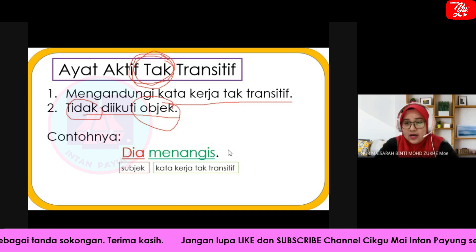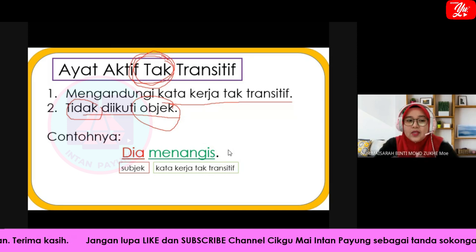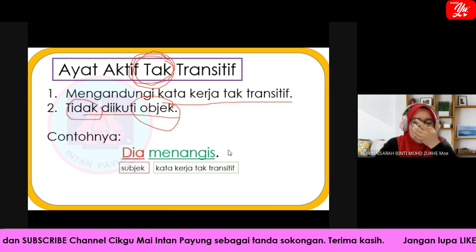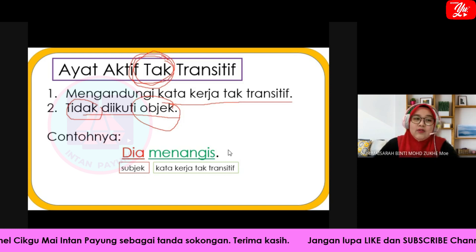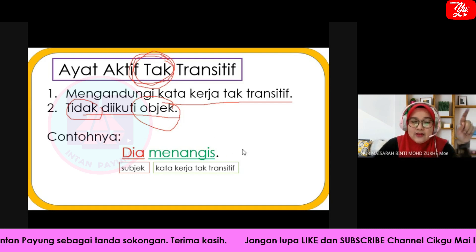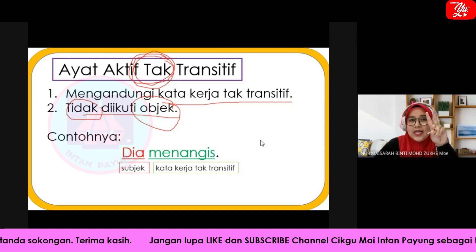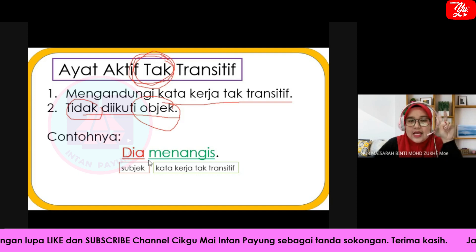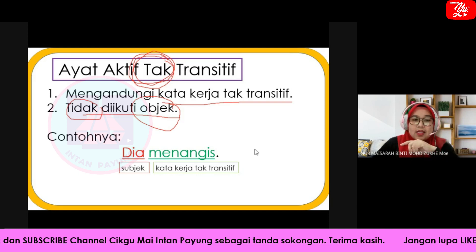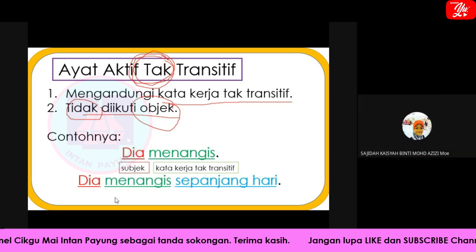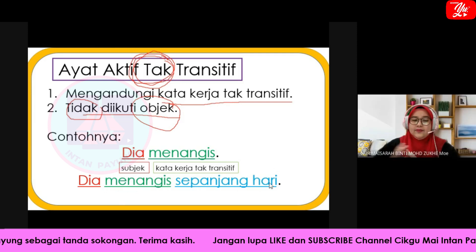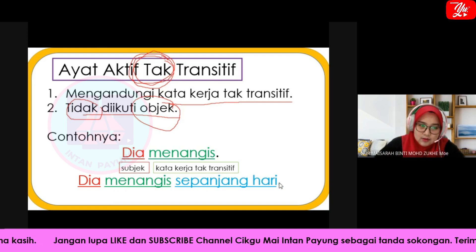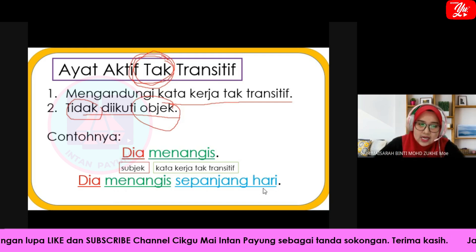Sebab kita boleh faham. Walaupun cikgu tak masukkan objek, kita boleh faham — 'dia menangis', kita boleh bayangkan air mata tengah berjatuhan. Itu ialah ayat aktif tak transitif. Ayat aktif tak transitif boleh datang dalam dua keadaan: pertama, 'Dia menangis' sahaja — ayat pendek, ayat mudah. Dalam situasi kedua, 'Dia menangis sepanjang hari' — masih ayat aktif tak transitif.